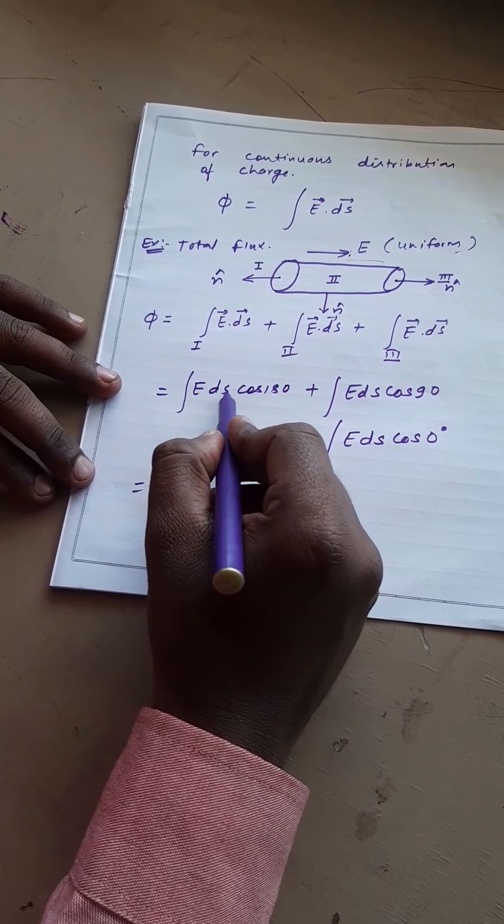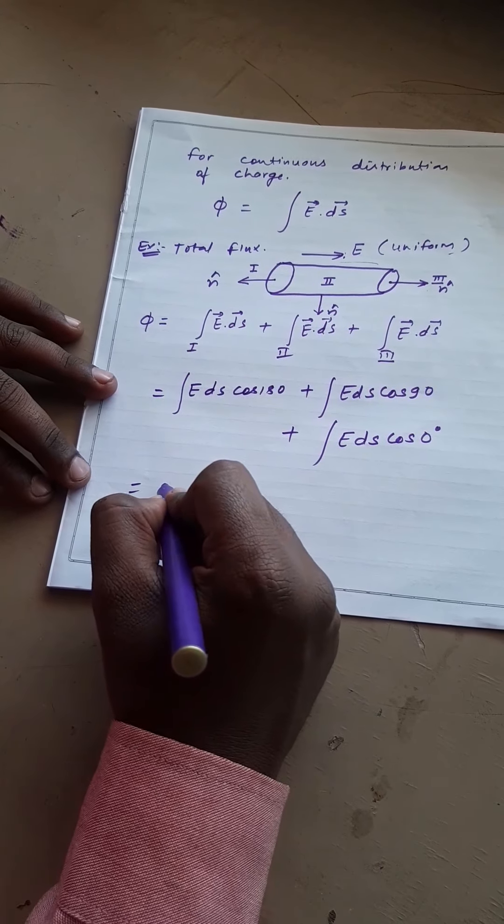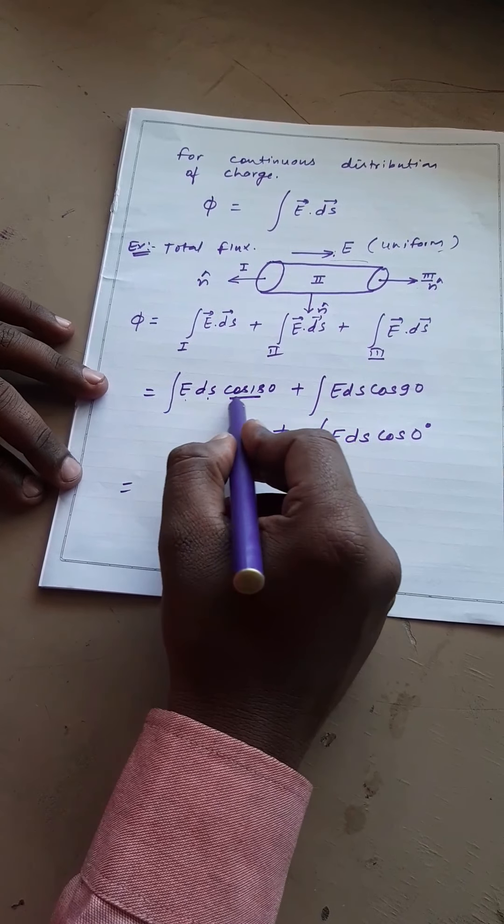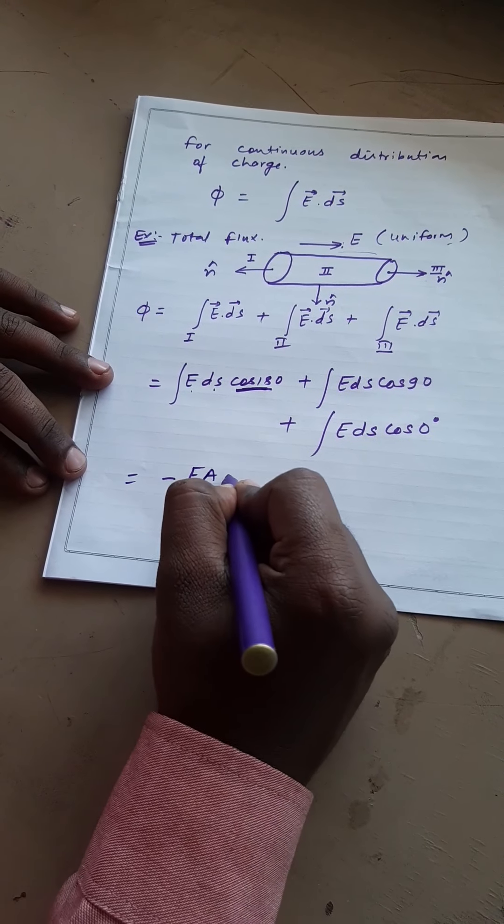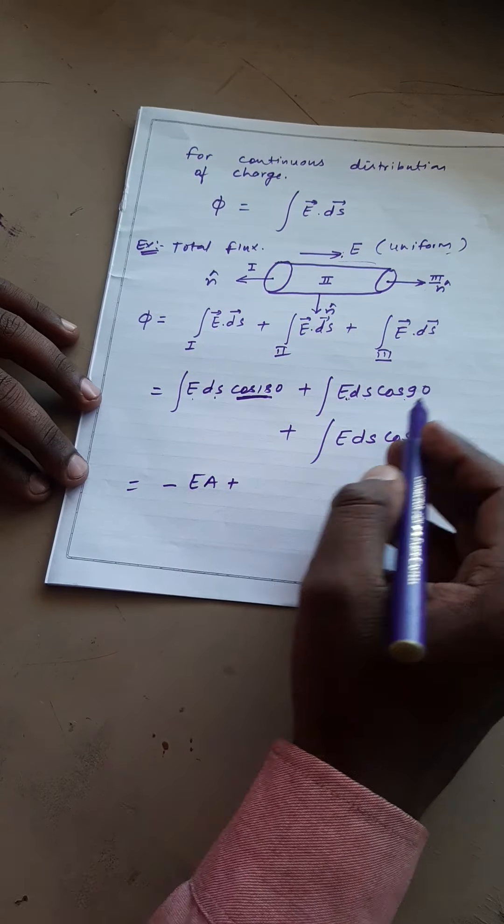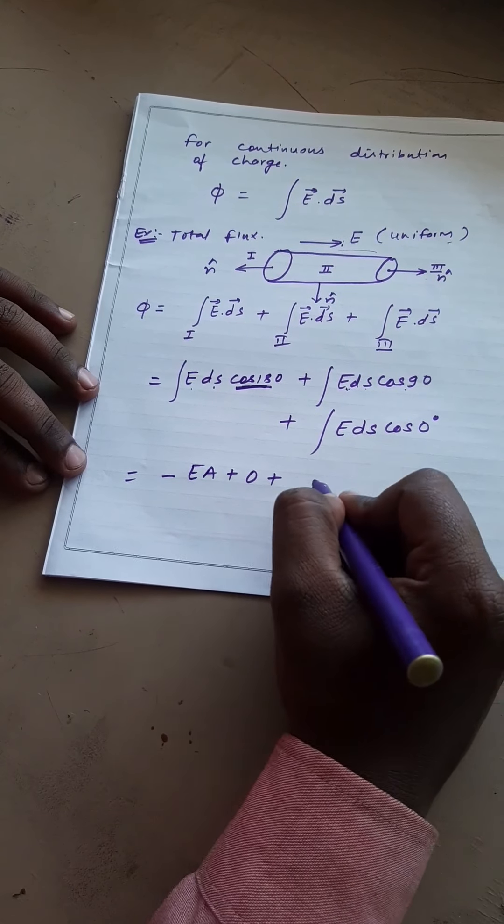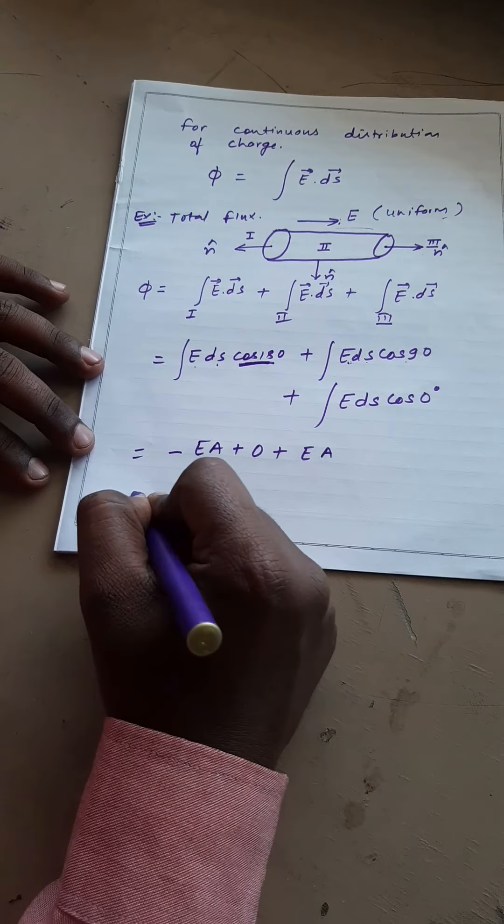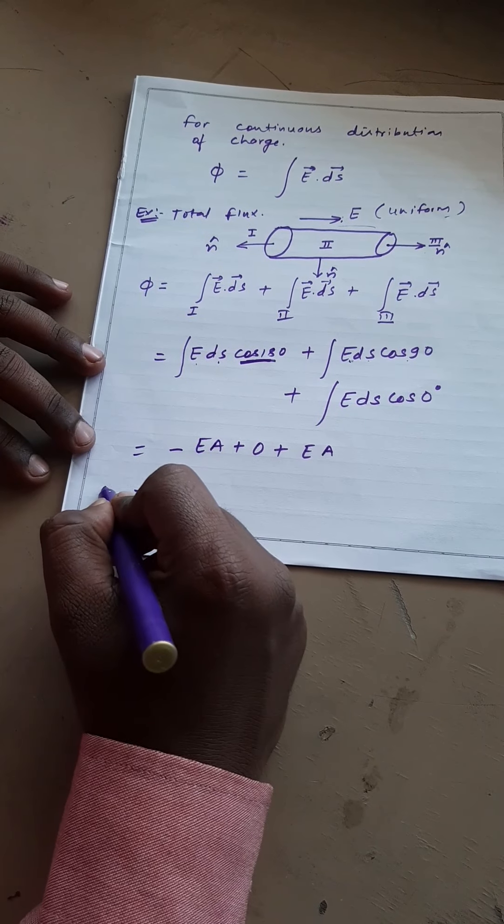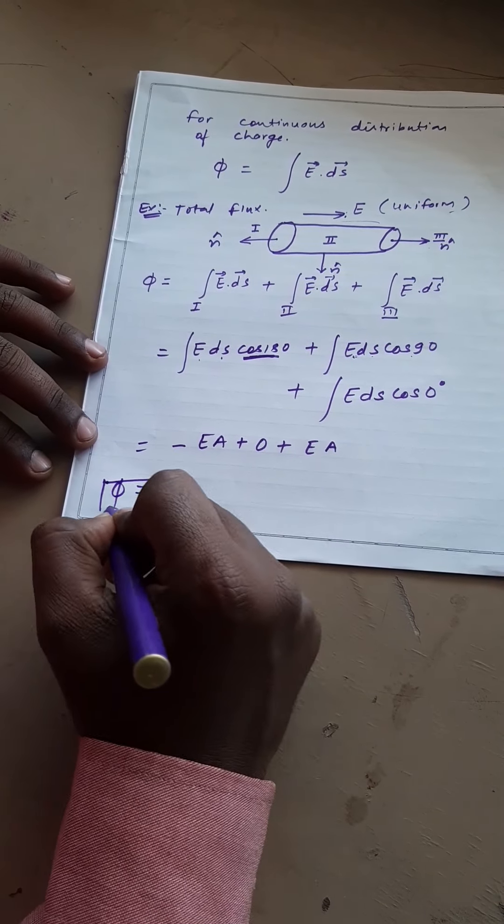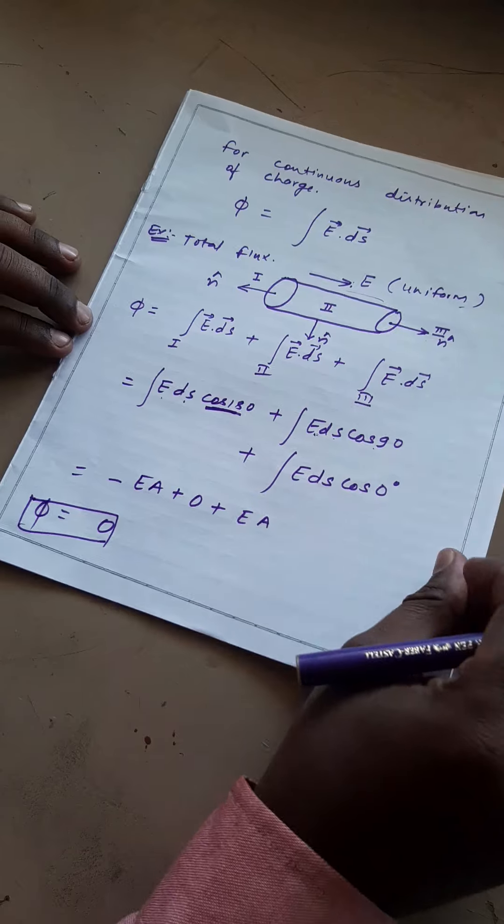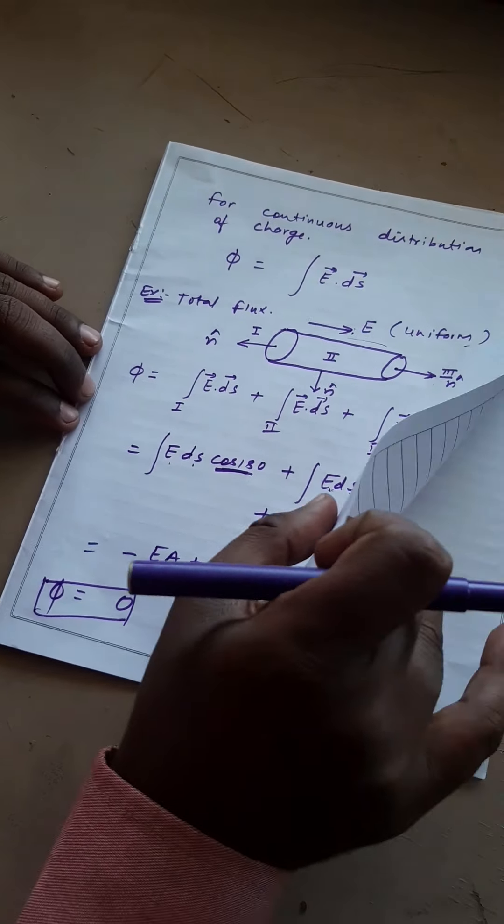If we integrate ds we can get A which is equal to E into A and cos 180 is minus 1. So we can write it as -EA. E ds cos 90 is 0 and it is simply EA. So the total flux will come out to be 0. In this way we can calculate electric flux for any curve.